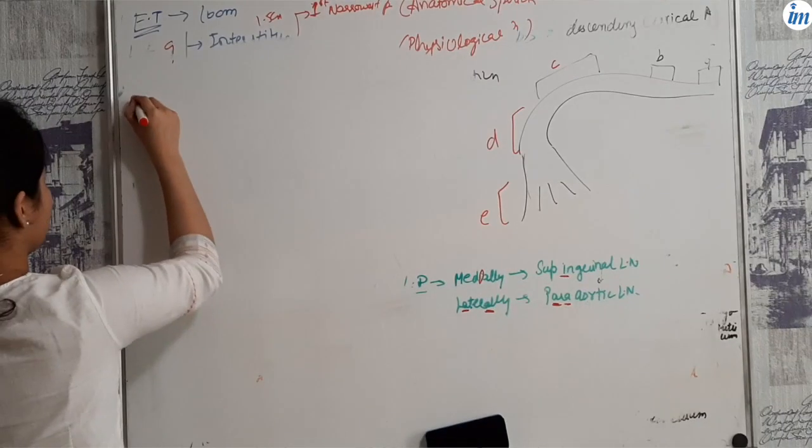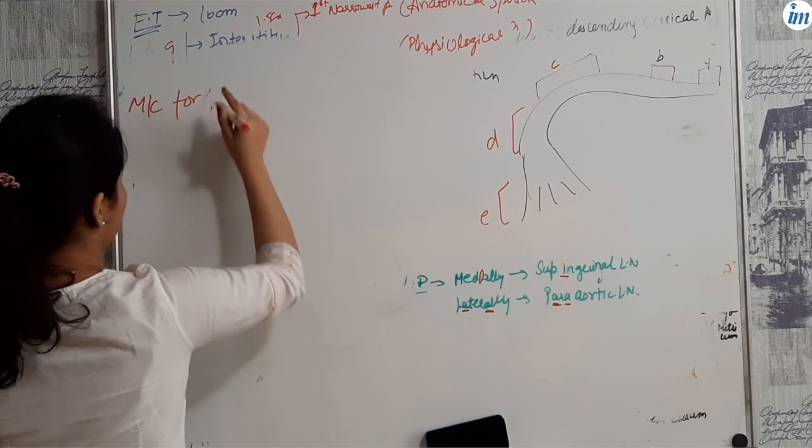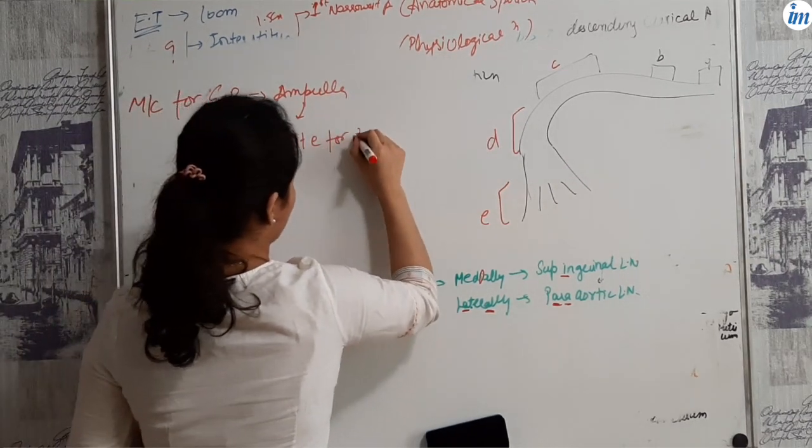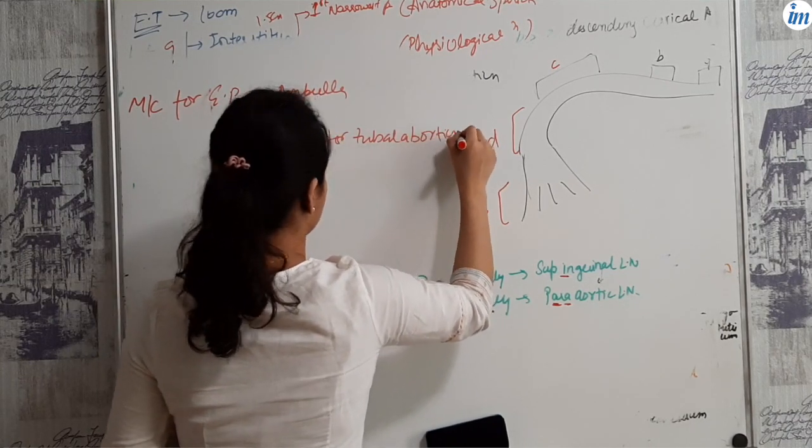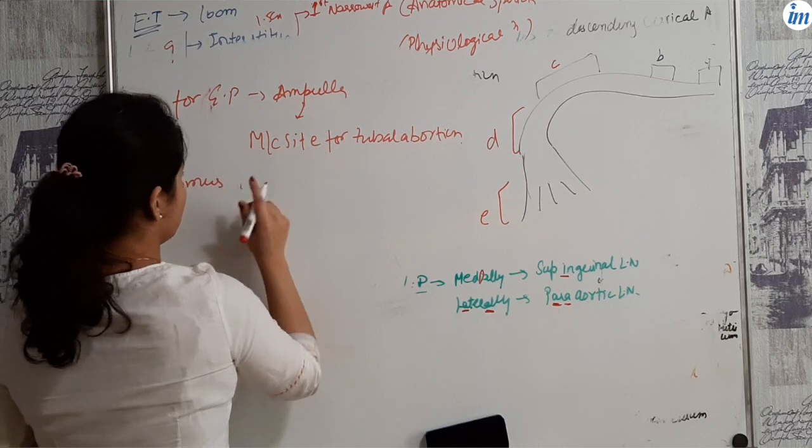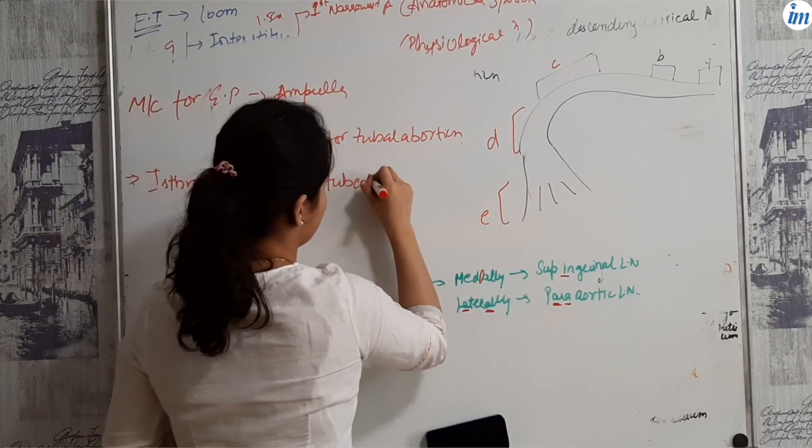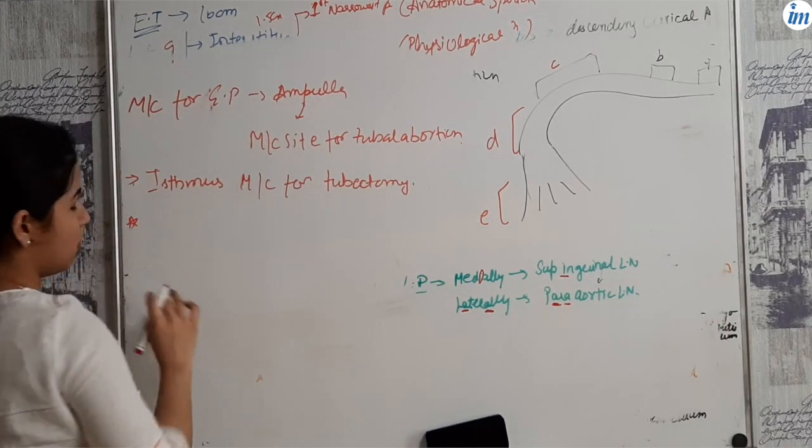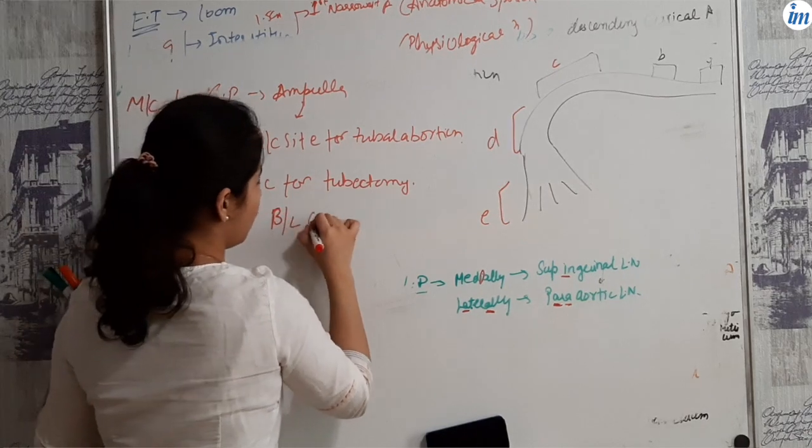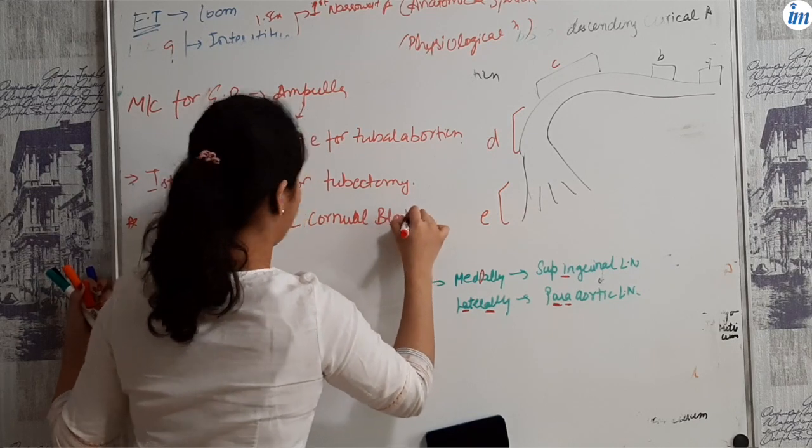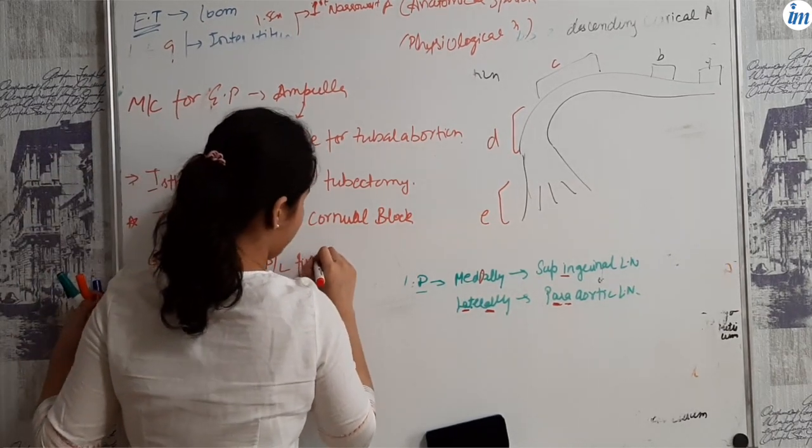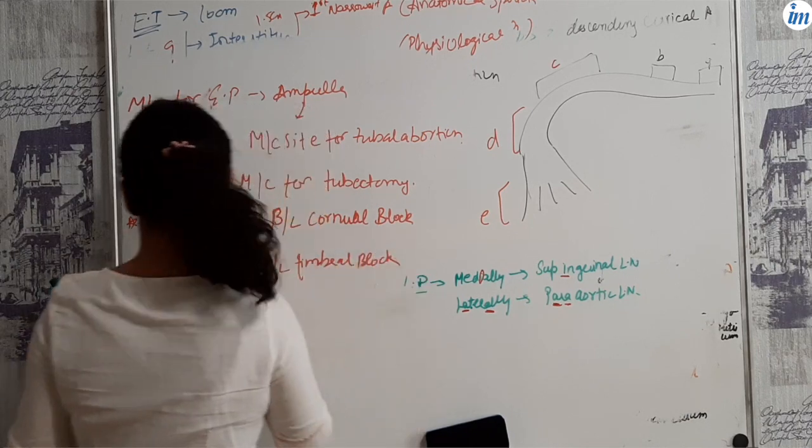Some important points about the fallopian tube. The most common site for ectopic pregnancy is ampulla and also the most common site for tubal abortion. Isthmus is most common site for tubectomy. Just mark as star point: TB generally causes bilateral cornual block, whereas gonococcus causes bilateral fimbrial block.